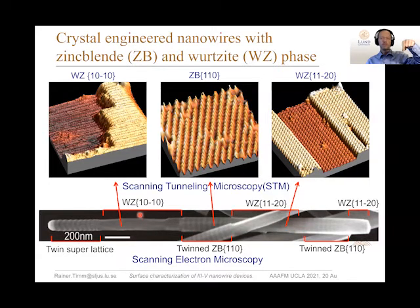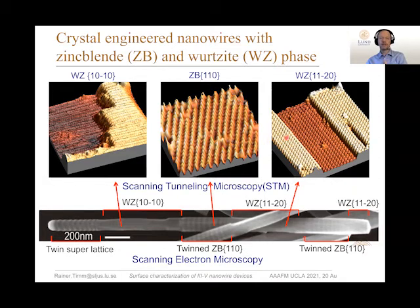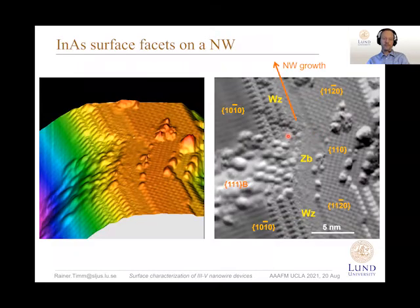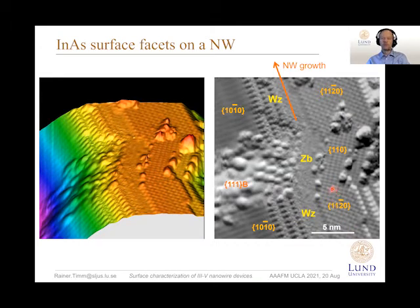We can take our STM tip and move along the nanowire, coming from one area — this is the wurtzite (0001) surface — to another area — this is the well-known zinc blende (110) surface — and again to a different type of wurtzite surface, the (11-20) surface in this example. Even more exciting is what happens at the interface between them. We can move from a wurtzite area across this interface, which is perfectly smooth, to a zinc blende segment and again to the wurtzite segment.